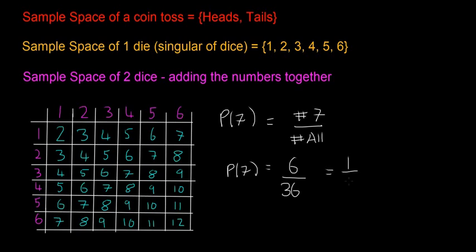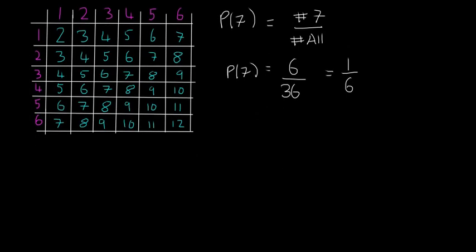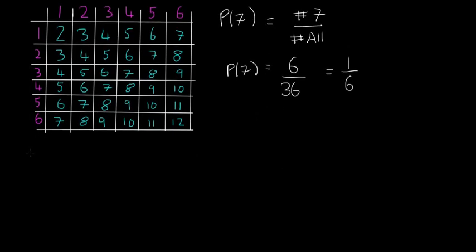So that means the probability of getting a 7 is 1 over 6 when you simplify that. It's just a much easier way to write out the sample space first and then count all the 7s you see there instead of trying to think in your head about the different possibilities. And that's the same for any different number. For example, the probability of getting a 2 — you count all the 2s. In this case it's just 1, so it's going to be 1 over 36.